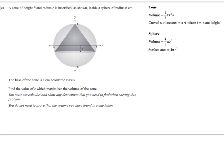We've got a cone inside a sphere. The cone has height h and radius r, and it's sitting inside a sphere with radius 6. This is showing us a cross-section. The base of the cone is below the x-axis, and we're shown how far below. That base is length s below. What we've got to do is figure out the value of s that's going to maximize the cone.